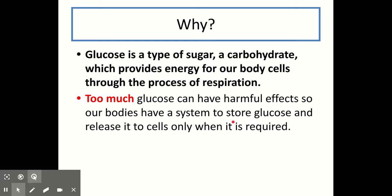Before we move on, I just want to mention diabetes. Diabetes is an illness where the person has high blood glucose levels and has issues either with producing or responding to an important hormone called insulin. Diabetics usually take insulin after they eat to bring down the level of their blood glucose back to normal, and you'll basically see why this is as we go through the next example.